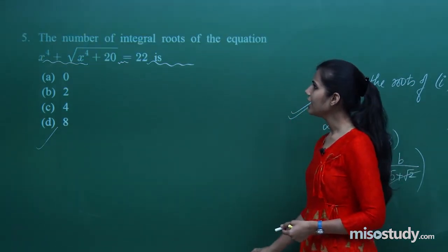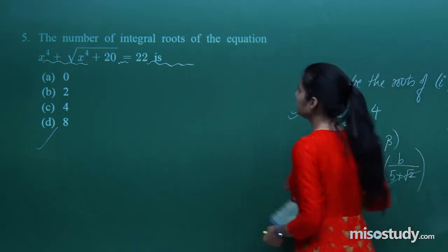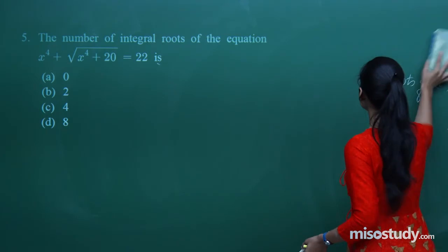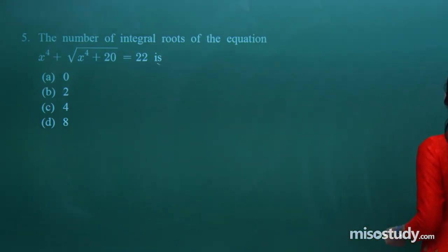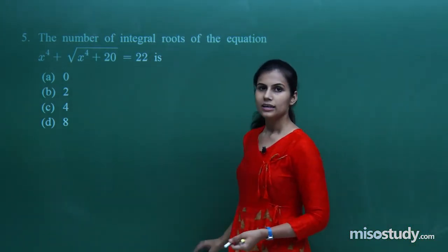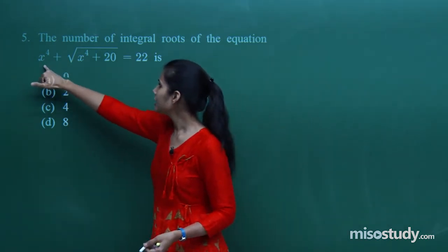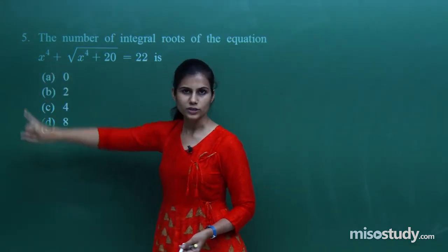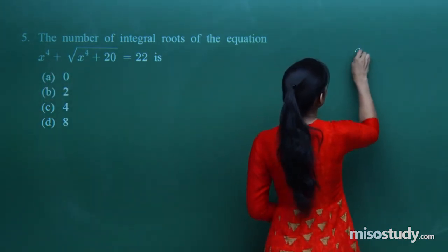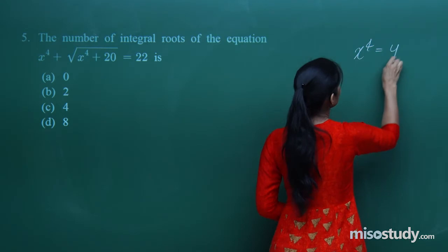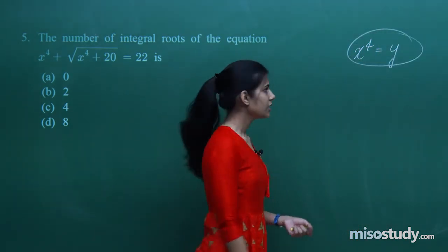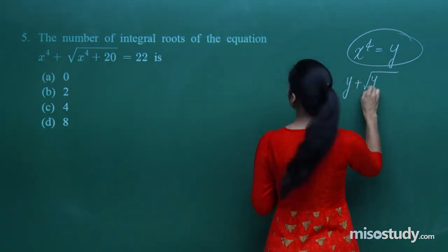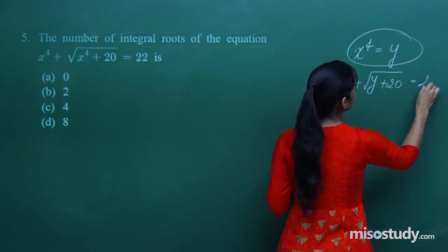For the last question: the number of integral roots of an equation involving x⁴. Working with x⁴ directly is tedious, so let y = x⁴. The equation becomes y + √(y + 20) = 22.